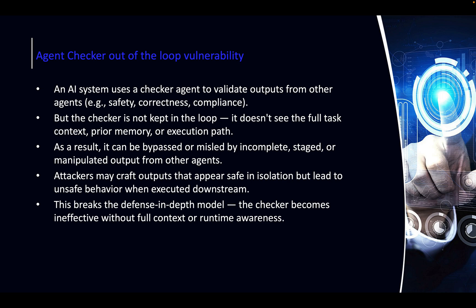Agent Checker Out of the Loop vulnerability: this is when the AI system is supposed to use a human in the loop to check critical actions. Think of a refund scenario — someone says their new stove never arrived and wants a refund. If this is automated and critical decisions like refunding a thousand or two thousand dollars are not reviewed, that's a vulnerability on its own. Critical actions can take place without human oversight. Think of a nuclear reactor — decisions on when to shut down or adjust temperature absolutely require a human in the loop.